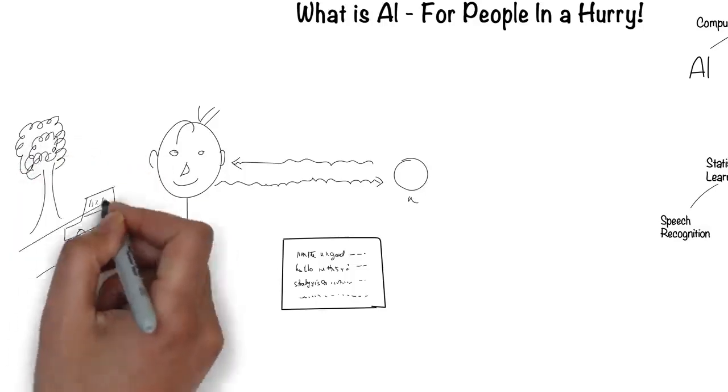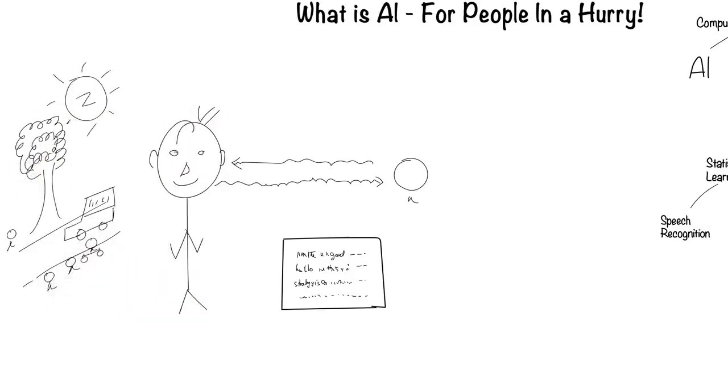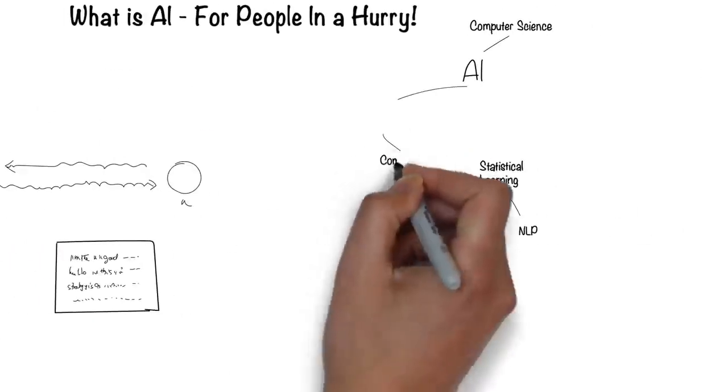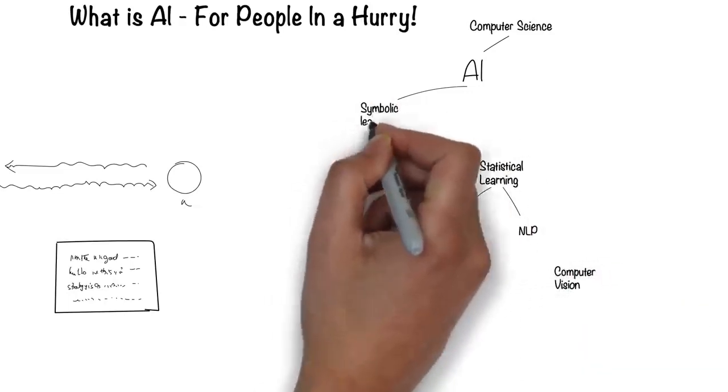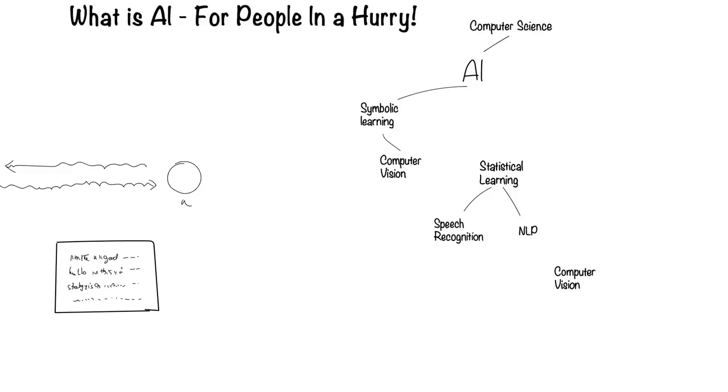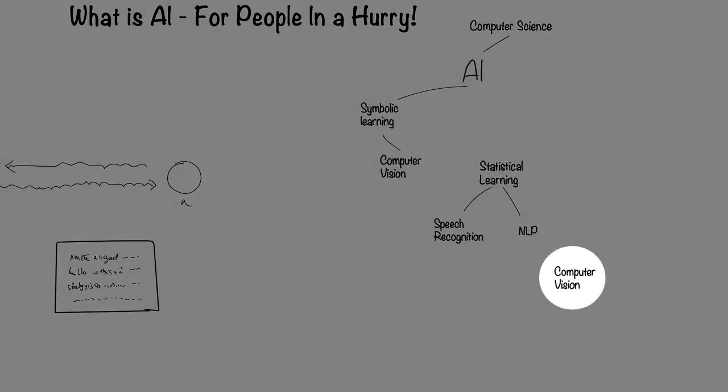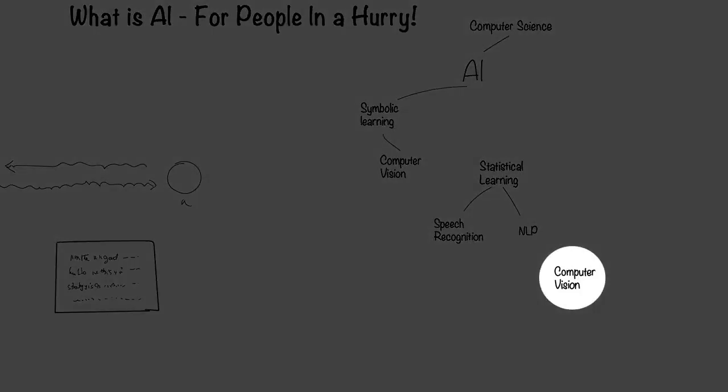Humans can see with their eyes and process what they see. This is the field of computer vision. Computer vision falls under the symbolic way for computers to process information. Recently, there's been another way, which I'll come to later.